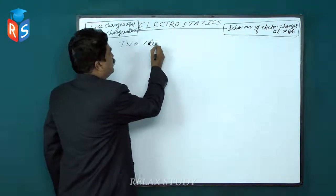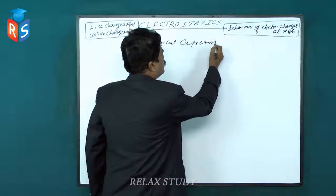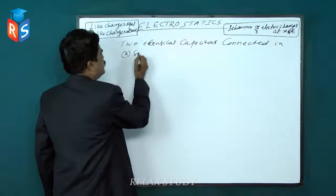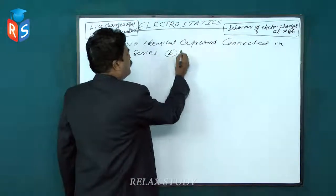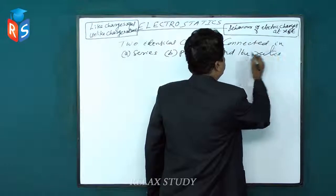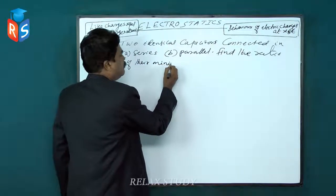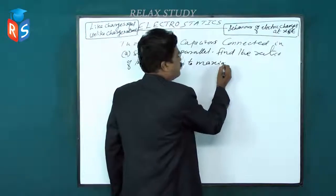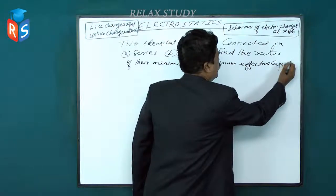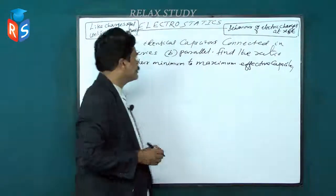Two identical capacitors connected in series and parallel. Find the ratio of their minimum to maximum effective capacitance.